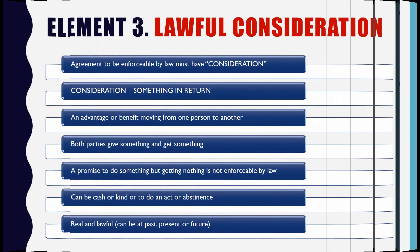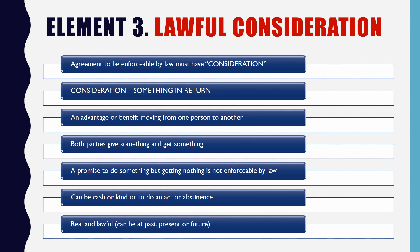Element 3: Lawful Consideration. An agreement to be enforceable by law must have consideration. Consideration means something in return. An advantage or benefit moving from one person to another person is called consideration. Both parties give something and get something. In the first example, Ramya sells her bicycle to Ms. Divya and Divya pays Rs. 5000 to Ms. Ramya — both of them are getting something. If you promise to do something but get nothing in return, it is not enforceable by law, and a contract will not be created.